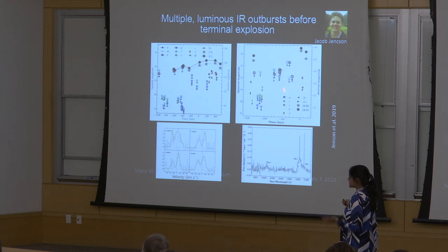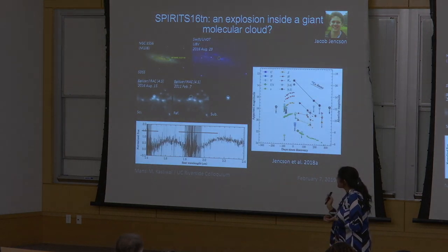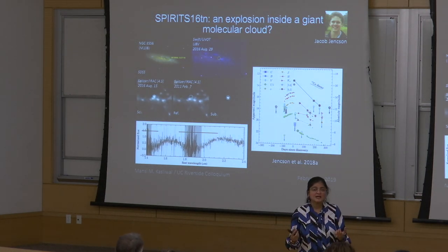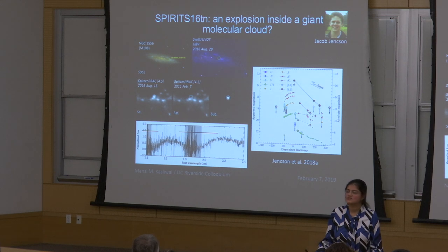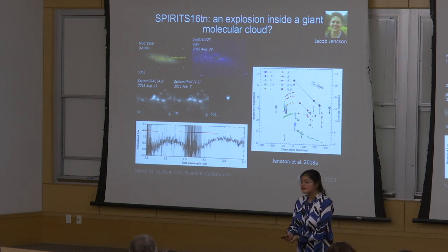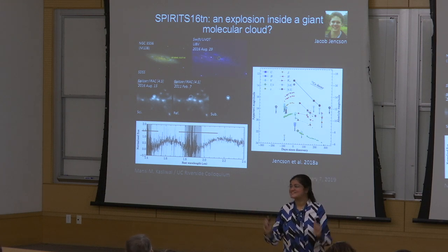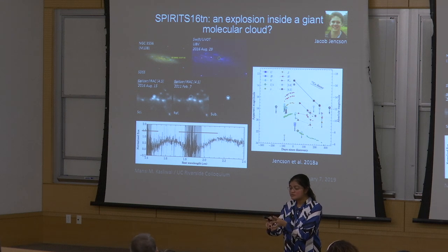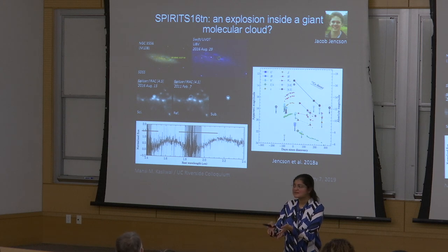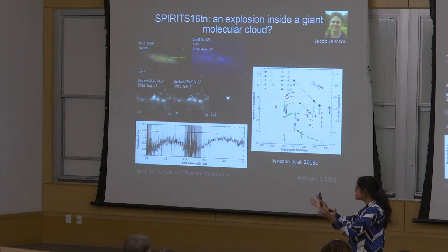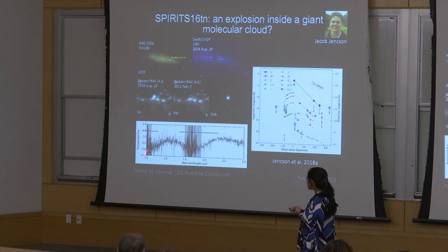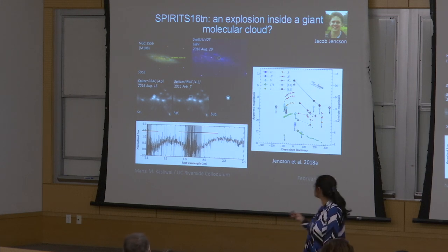Jacob also sees supernovae showing giant water features — supernovae don't make water, so this can't be coming from the supernova itself. Our best guess is that perhaps the supernova exploded in a molecular cloud — the same molecular cloud that gave birth to the star, still around and not completely destroyed during the star's life. When the supernova exploded, perhaps it was not strong enough to destroy the molecular cloud, and for the first time we may be seeing a hint of that actual molecular cloud that gave birth to the supernova.